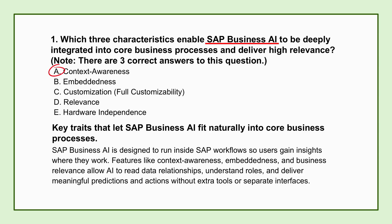Context awareness — that sounds a little like jargon. How is it different from a standard BI tool that just looks at historical data? It goes quite a bit deeper than just looking back. Context awareness means the AI understands the operational environment right now. It knows who you are as a user, your specific role, the exact process step you're in, and — crucially — the inherent data relationships within that business process. It's applying live operational intelligence.